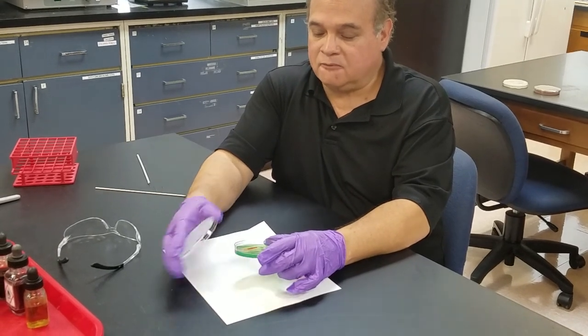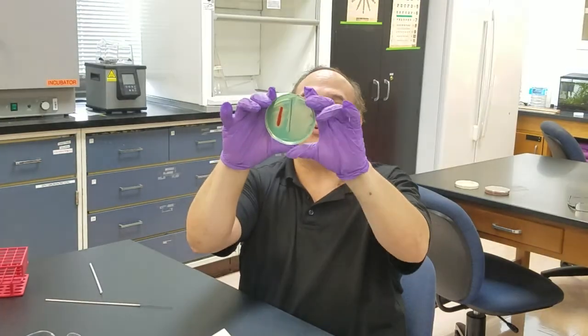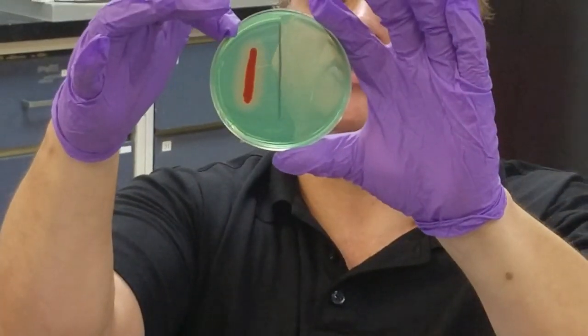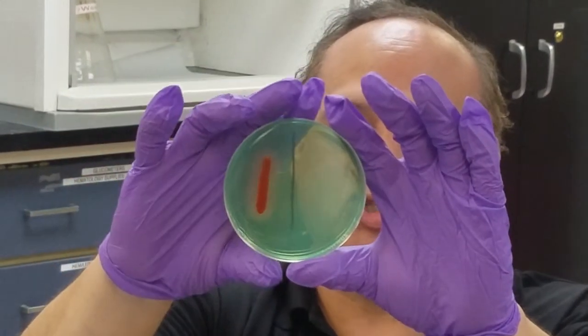If you look at these, you can see there's a clearing around this particular organism, which happens to be Serratia marcescens. But this one has no clearing and still remains green, so that's negative.